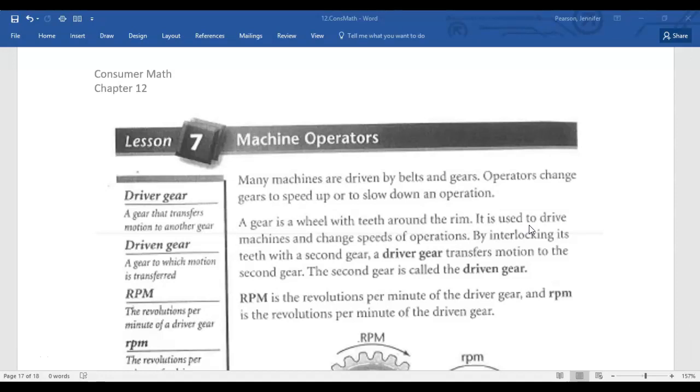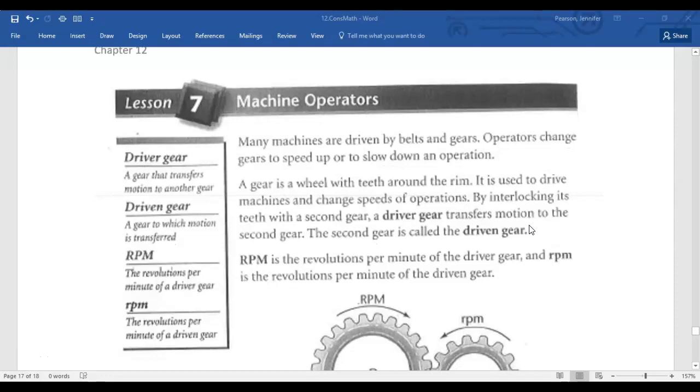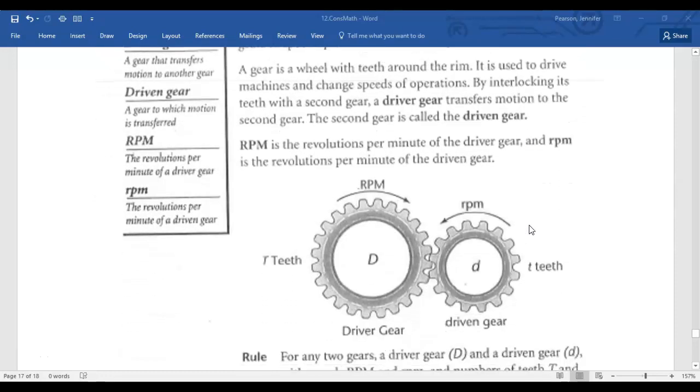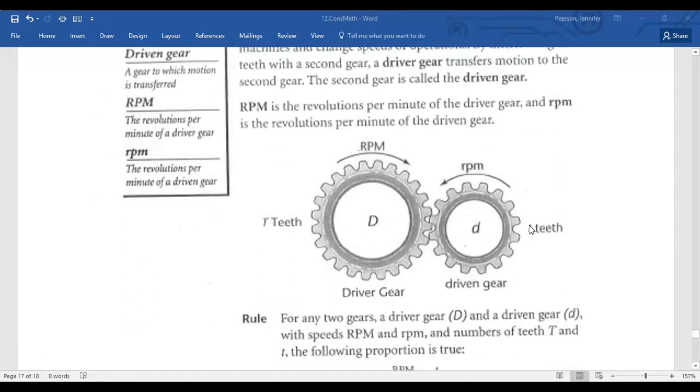This is math that machine operators might need to use in their real-life jobs. This is gears that are turning, and there's a ratio between the size of the gear, the number of teeth the gear has, and the speed that the gear is turning.